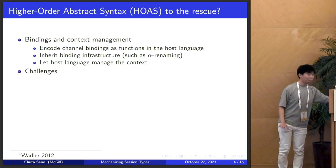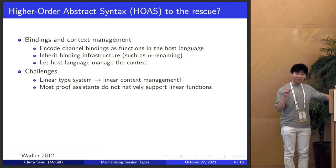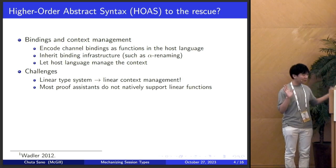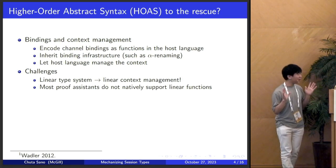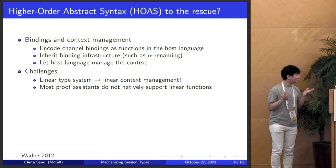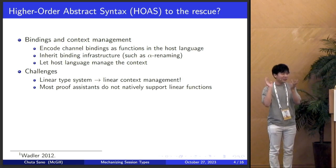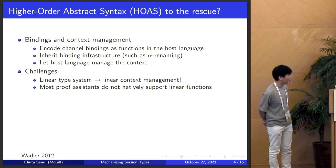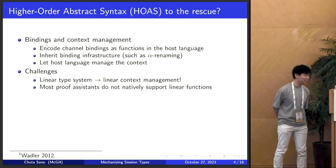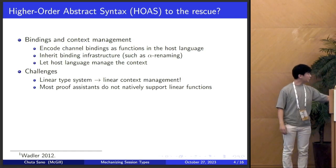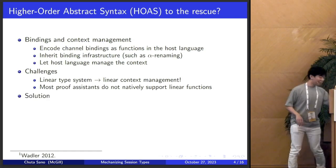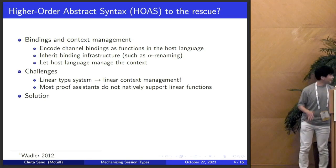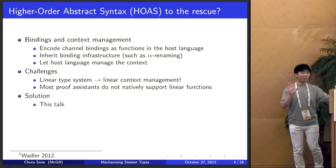We still have a linear-type system. Most proof assistants don't natively support linear implications, so you can't simply use higher-order abstract syntax to model bindings. The solution, I will let you know in the next 12 minutes.